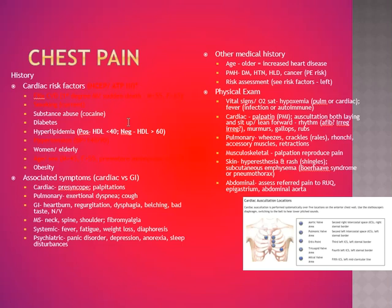Physical exam for chest pain: get vital signs and an O2 sat to look for hypoxemia, which can indicate pulmonary or cardiac etiology. Check for fever — possible infection or autoimmune cause. Cardiac exam: feel the point of maximal impulse, check the pulse, and auscultate both laying and sitting up, leaning forward. Assess for rhythm irregularities — atrial fibrillation presents as an irregular, irregular heart rate you can feel at the wrist. Listen for murmurs, gallops, and rubs. Pulmonary: listen for wheezes, crackles, rales, rhonchi; observe for accessory muscle use and retractions. Musculoskeletal: palpate for reproducible tenderness — could be costochondritis. Examine the skin for hyperesthesia or rash suggesting shingles, and check for subcutaneous emphysema (Boerhaave syndrome — possible pneumothorax). Assess the abdomen for referred pain to the right upper quadrant or epigastrium, and palpate for an abdominal aorta.